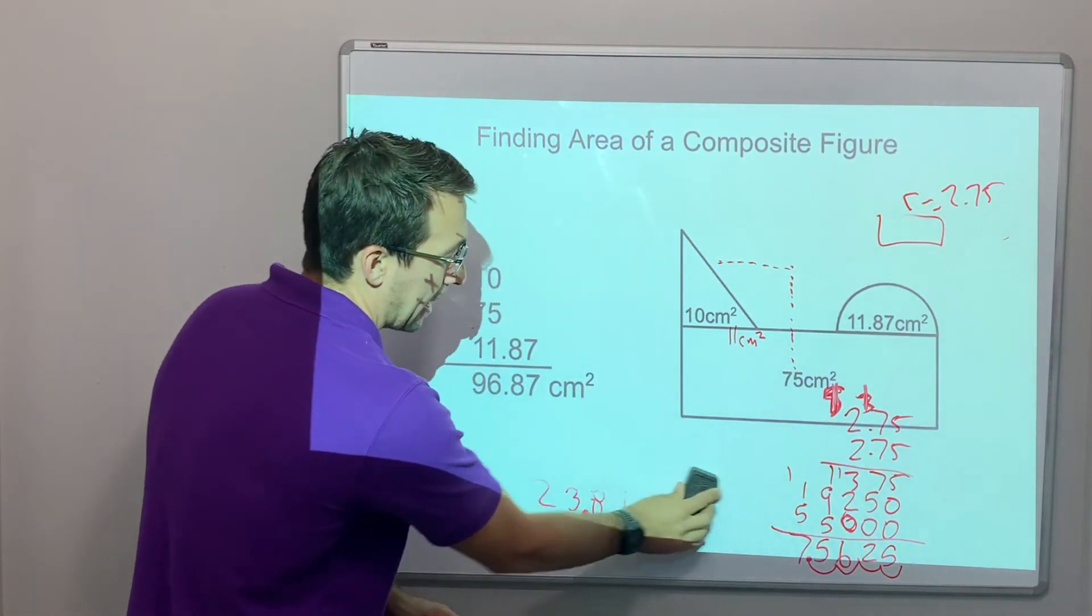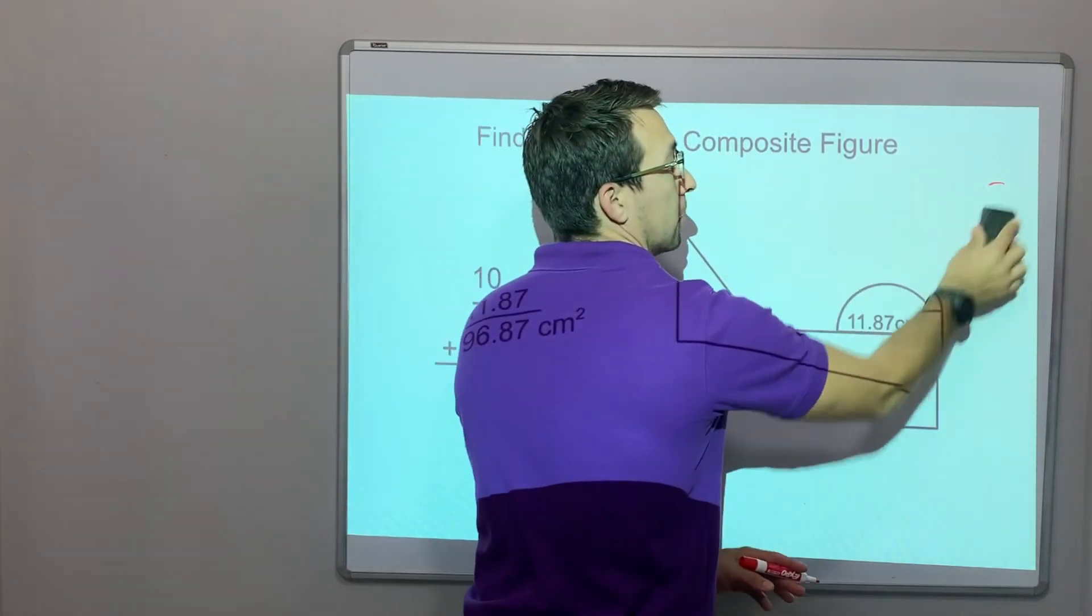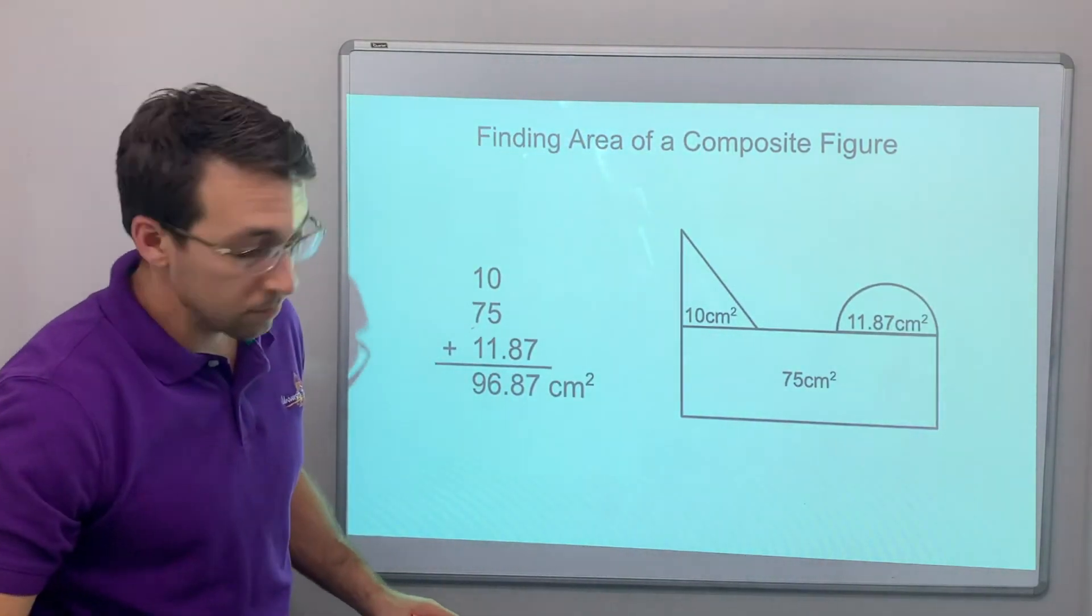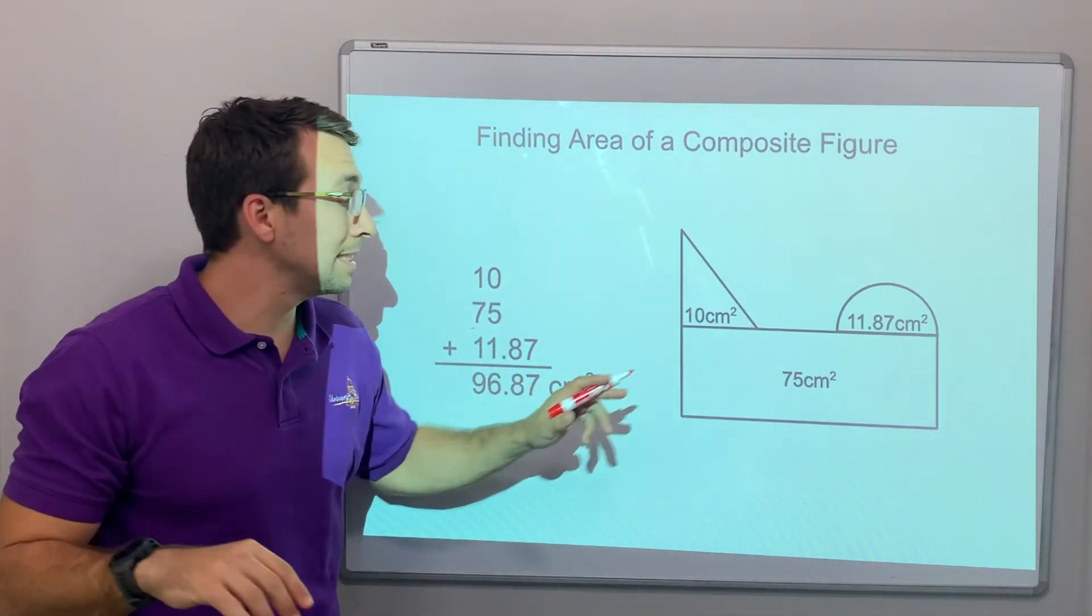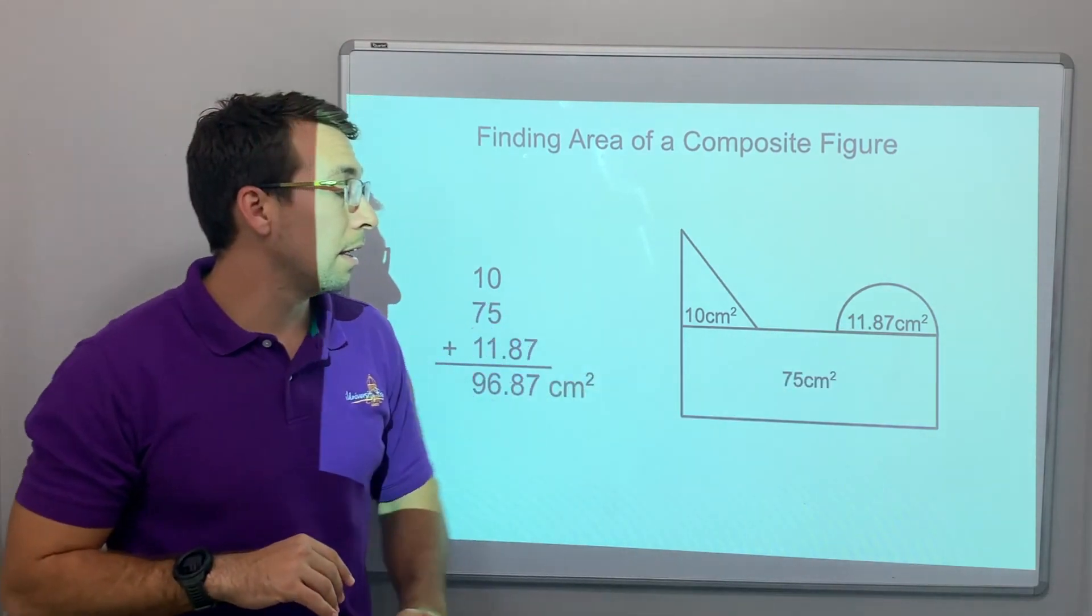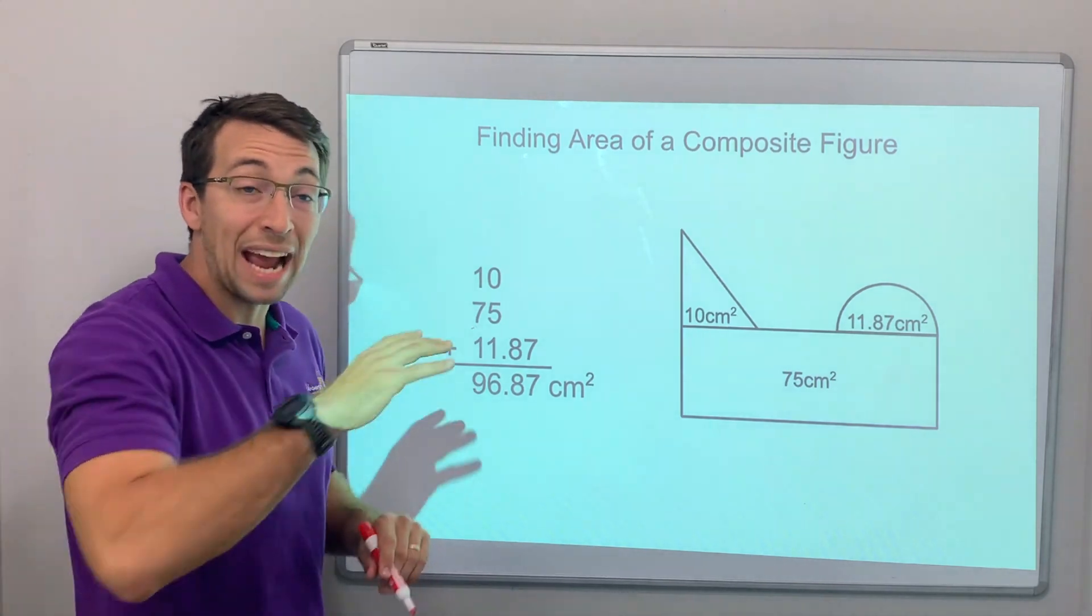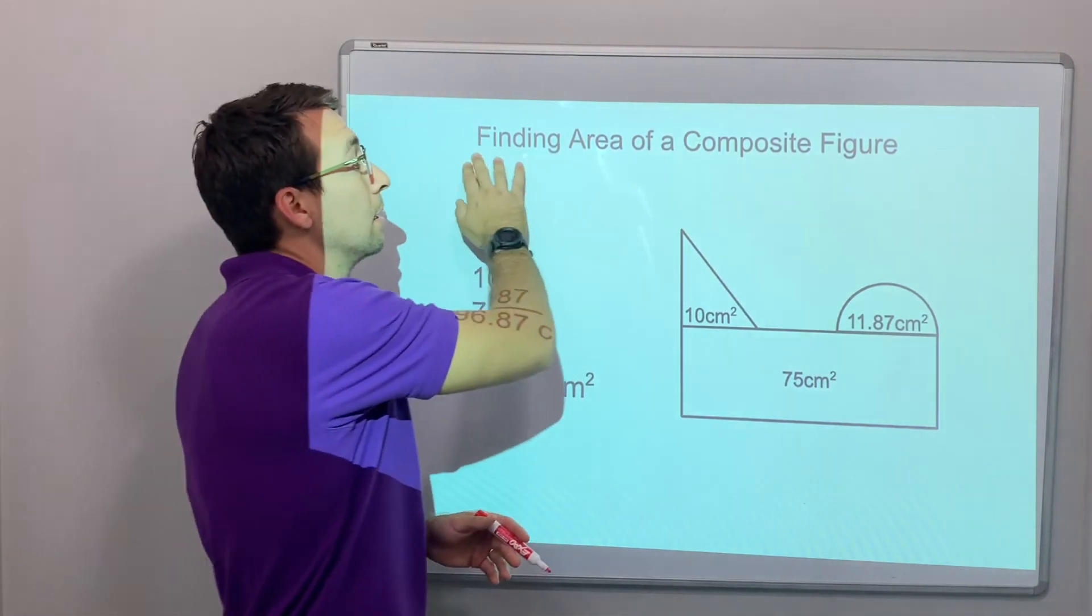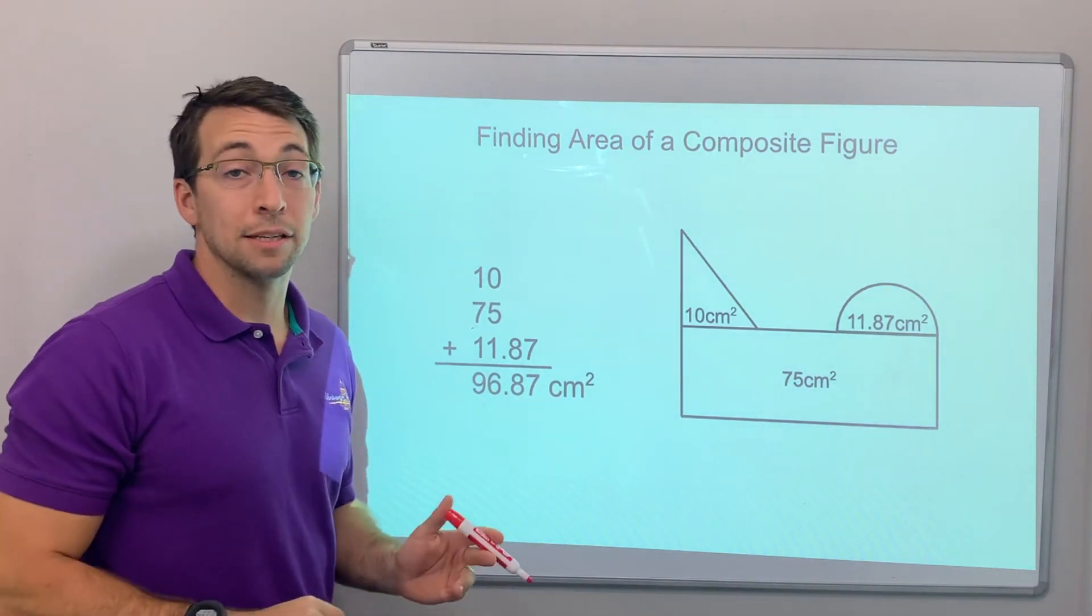We have our answer here. 10 centimeters. We got it. 75 centimeters. We got it. 11.87 centimeters. 96. We add all those together. The area of our composite figure is 96.87 centimeters squared.